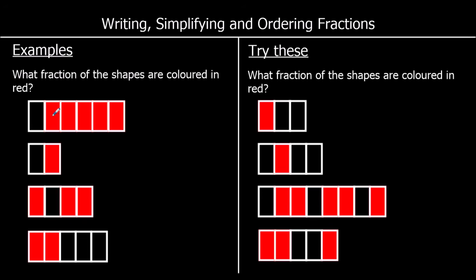So let's look at our first shape. There are six parts in total and five are red. So five out of six are red. And as a fraction we write that as five over six, or five sixths.